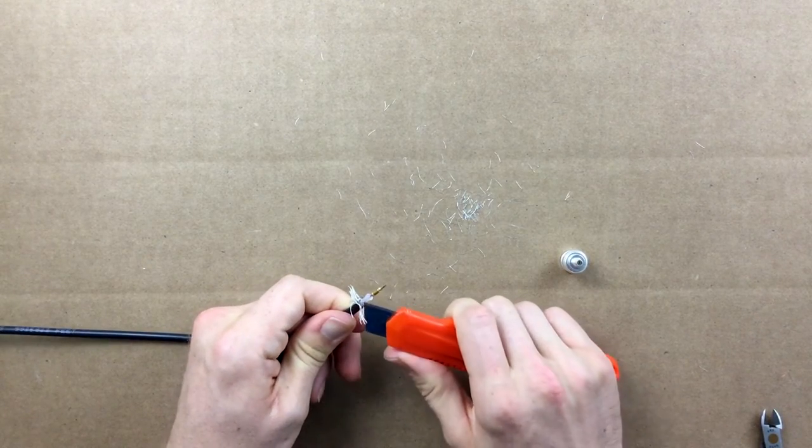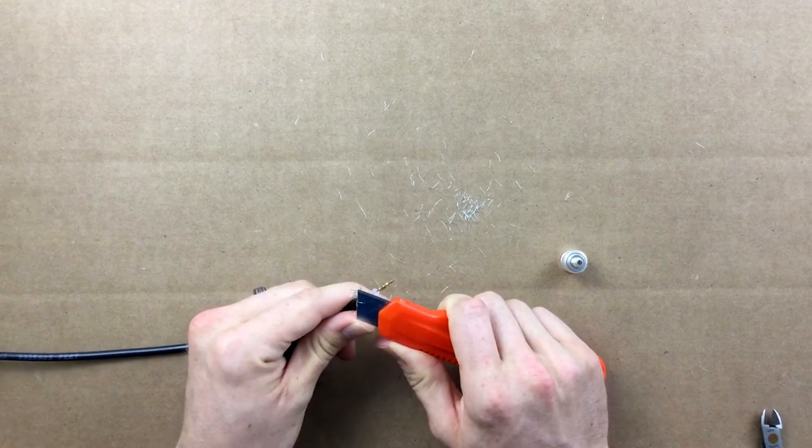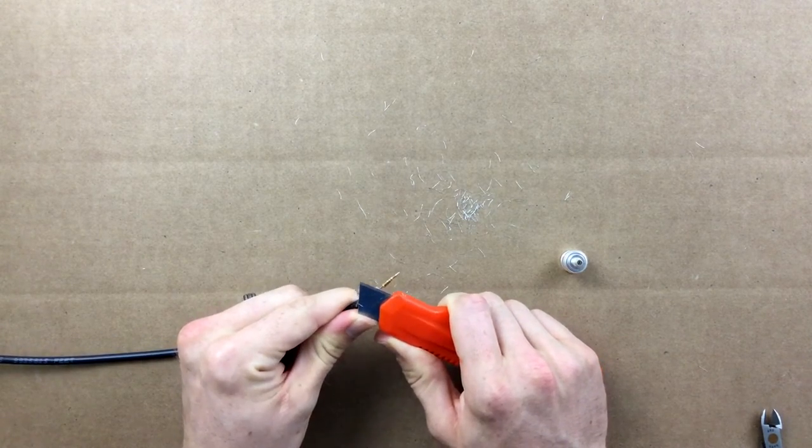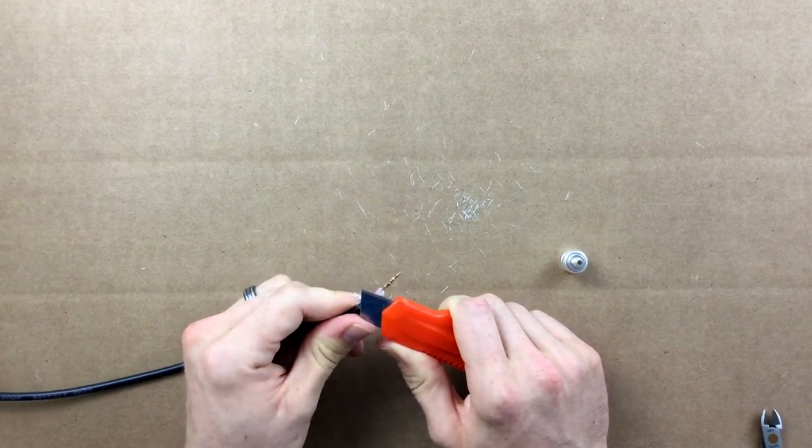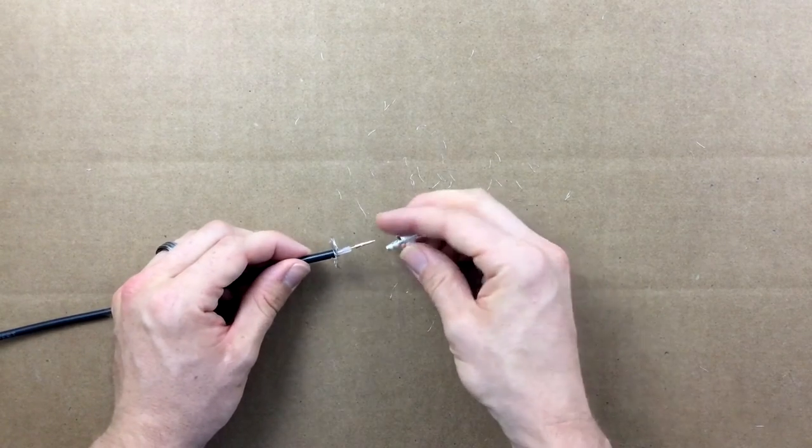Trim down or sharpen the dielectric with your utility knife or sharp diagonal cutters. Try seating the BNC male body one more time.